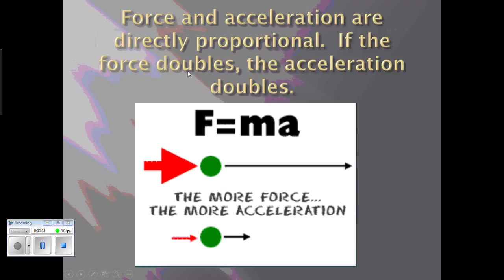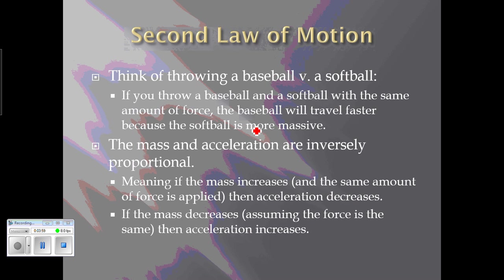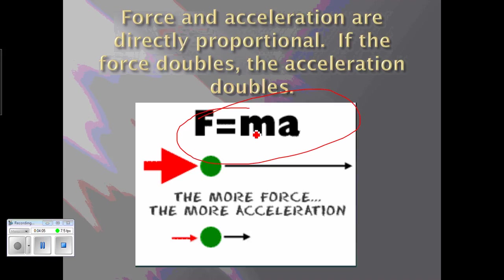Let me go back to this. The formula for Newton's second law of motion is that force equals mass times acceleration — F = ma. This is something we're going to use to calculate: if we know the mass and the acceleration, we can calculate the force, and vice versa. If I give you the force and the mass, you'll be able to calculate acceleration. The more force acting on the same object, the more acceleration.